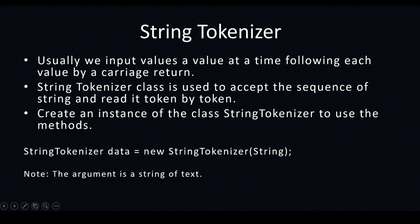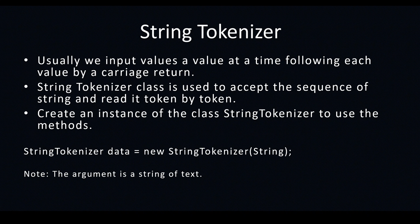You can see: StringTokenizer data = new StringTokenizer, with the string in parenthesis. Note that StringTokenizer is a single word with capital S and capital T. You use the new operator to create the instance. Within the bracket you can give the string value — it may be a sentence, a long sentence. You can use an input statement instead of a string directly. Java usually accepts all input as strings.